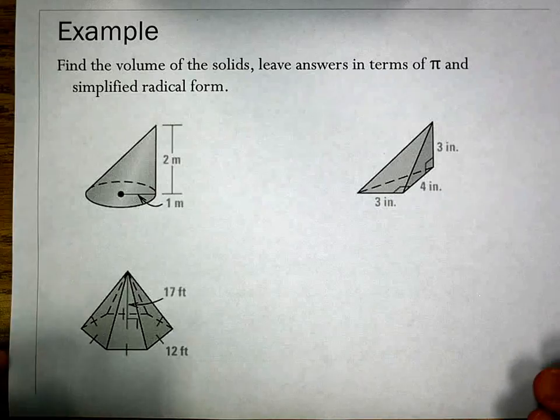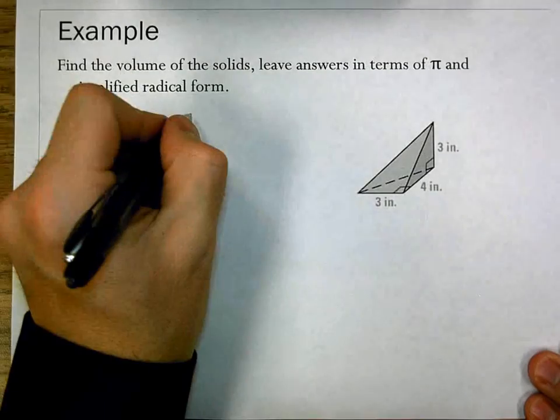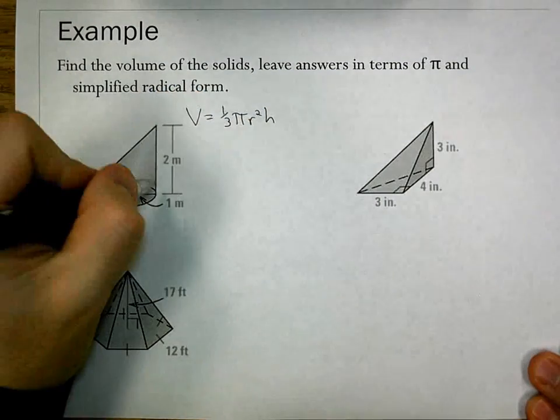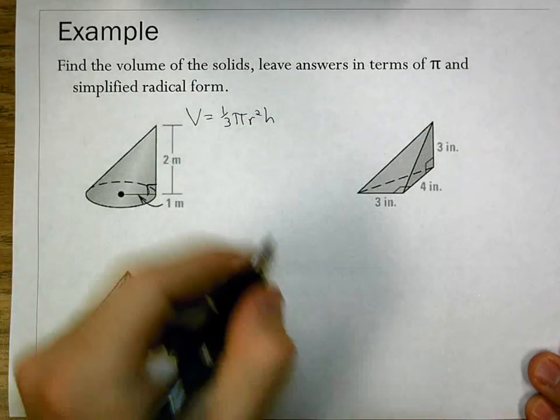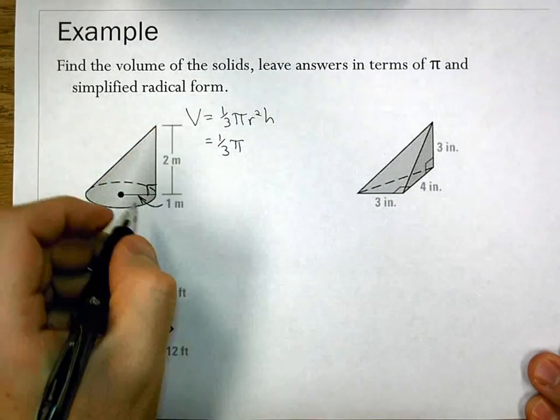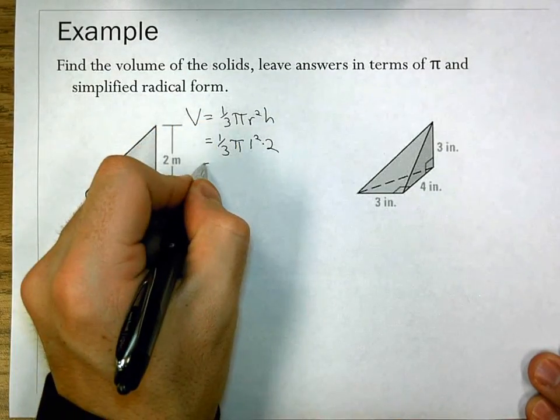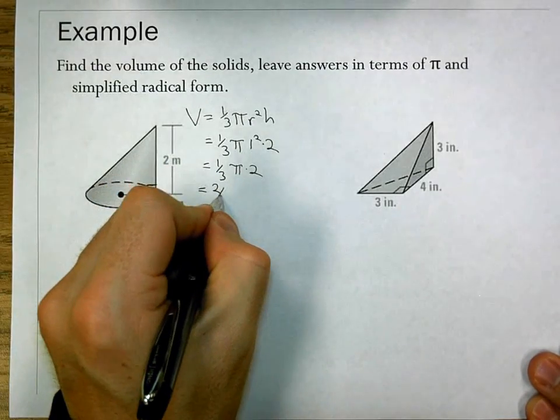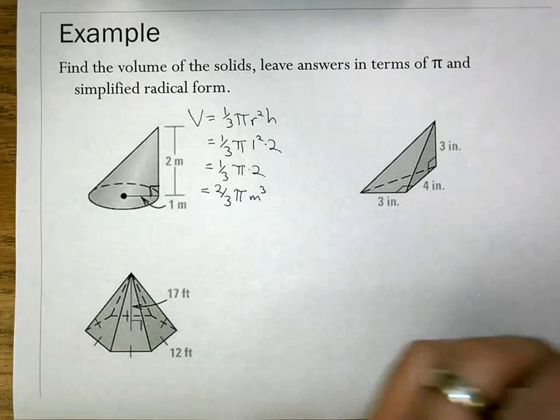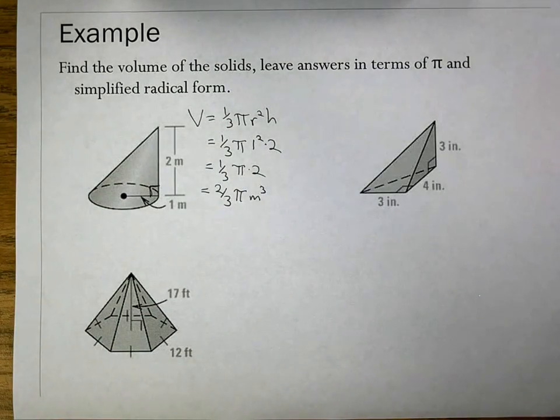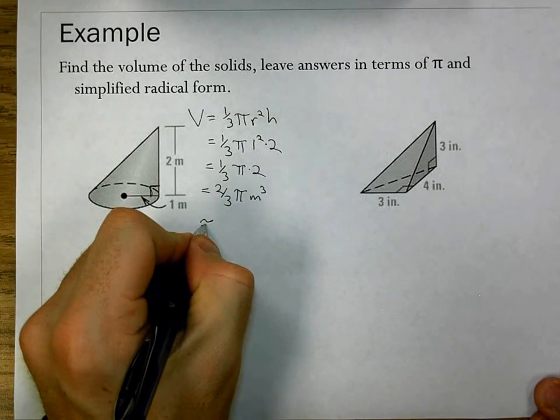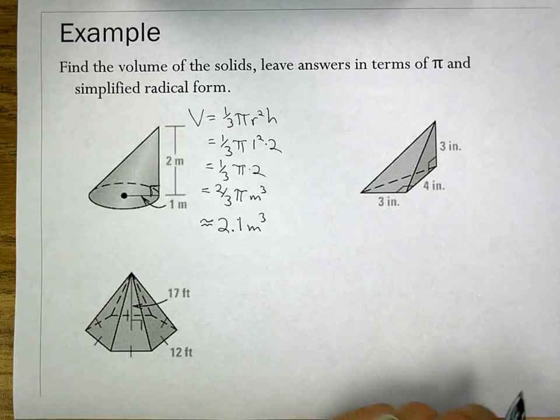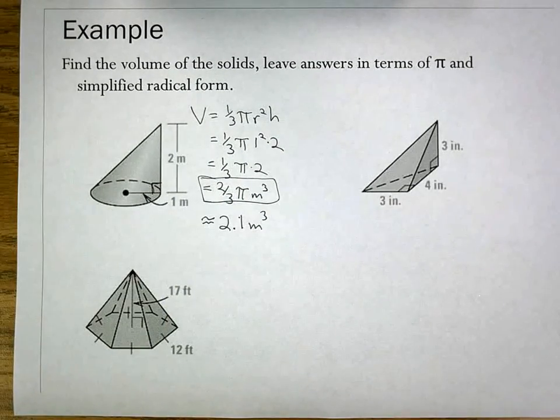A few more examples to finish up here. First one, I have a cone. My formula is one-third π r² times the height. Our height is perpendicular to the base, so we can use that one. One-third π times 1² times 2. That's one-third π times 1 times 2. It becomes two-thirds π meters cubed. That is simplified in terms of π. If we wanted it as a decimal, that is about 2.1 meters cubed.